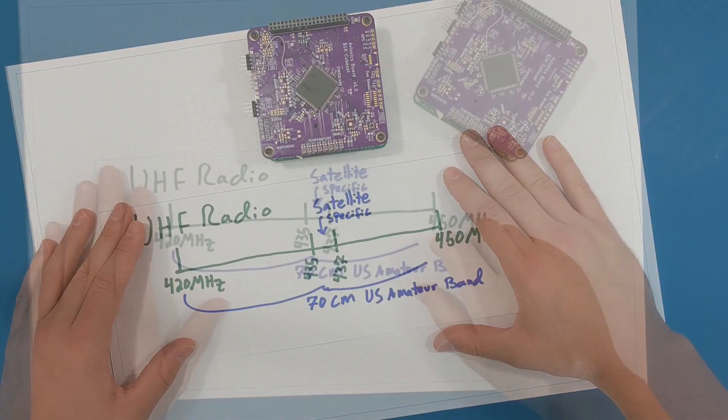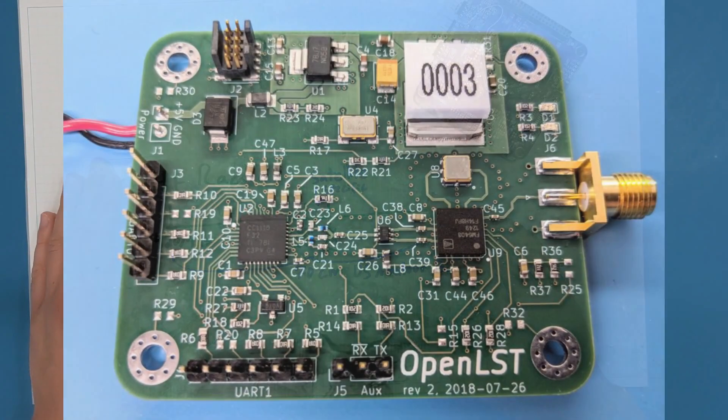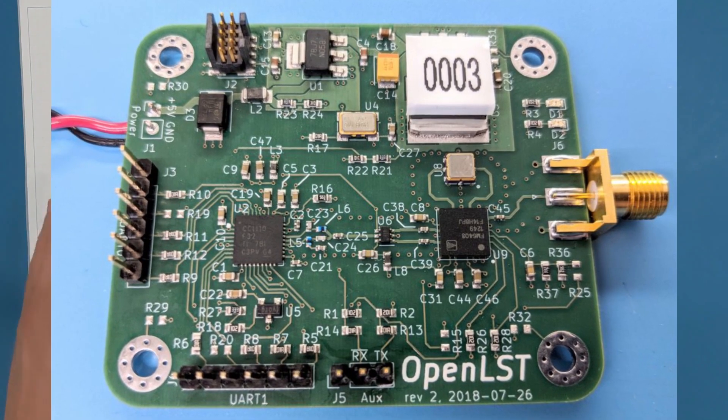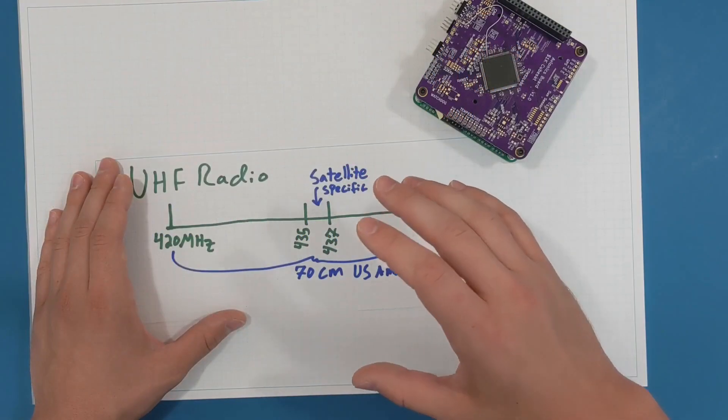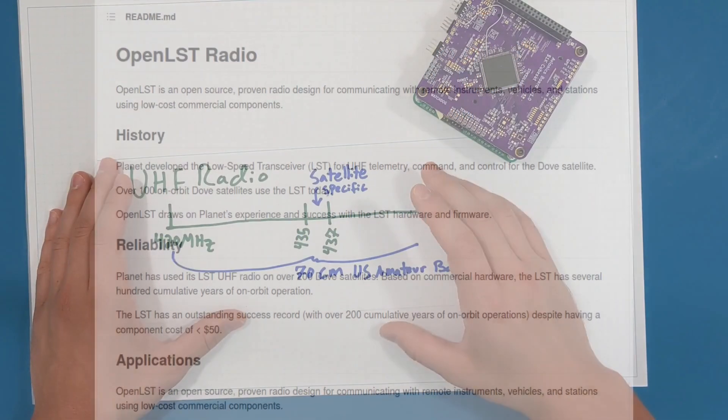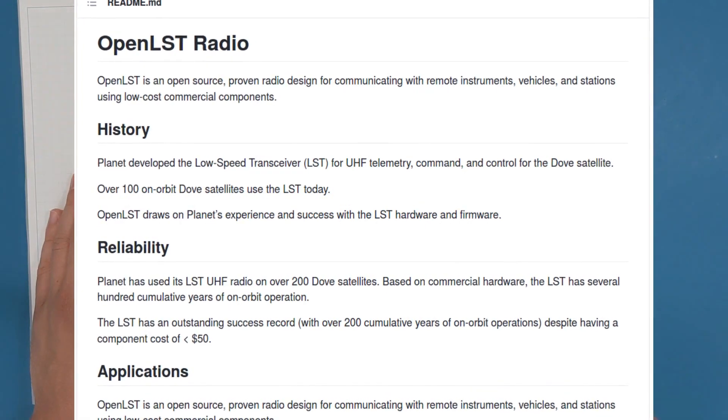I'm basing the radio for my $1,000 CubeSat on OpenLST, which is an open source hardware design that the company Planet released to the public a couple of years ago. This low speed transceiver design has been used by Planet on hundreds of its Dove satellites for command and control and basic telemetry.